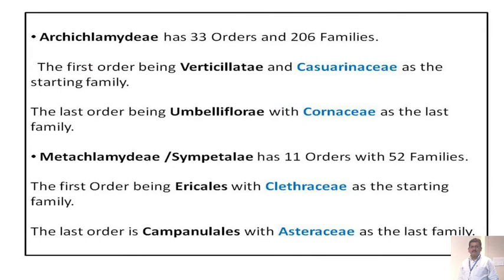Archichlamydeae has 33 orders and 206 families. The first order is Verticillatae with Casuarinaceae as the starting family. The last order is Umbilliferae with Cornaceae as the last family. So in Archichlamydeae, the most primitive family is Casuarinaceae and the most advanced family is Cornaceae. In Metachlamydeae, also called Sympetalae, there are 11 orders with 55 families. The first order is Ericales with Plumbaginaceae as the starting family. The last order is Campanulales with Asteraceae as the last family. This is the outline of the Engler and Prantl system of classification.